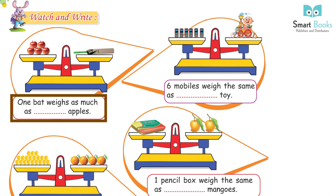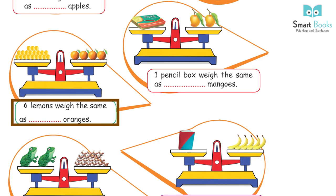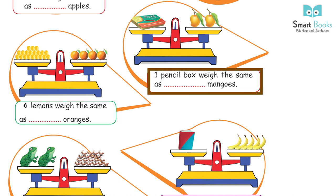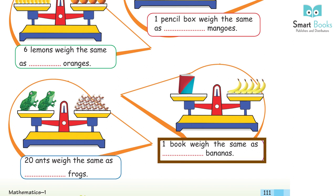Watch and write: A bat weighs as much as dash apples. Mobiles weigh the same as dash toys. A lemon weighs the same as dash oranges. A pencil box weighs the same as dash mangoes. Urns weigh the same as dash frogs. A book weighs the same as dash bananas.